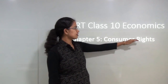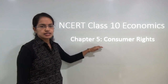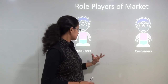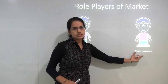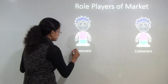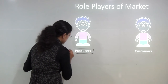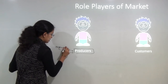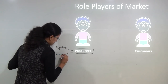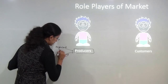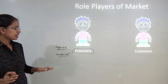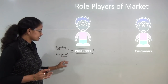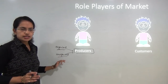Welcome back. We will be starting with the final chapter for Class 10 Economics, related to consumer rights. When we talk about a market, there are two role players: the producers and the consumers. Producers work in two sectors — the organized sector, where workers have protected jobs, and the unorganized sector, where there is job insecurity. It is important to protect labor in the unorganized sector.